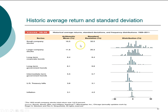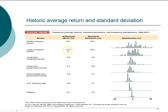Now that you know how to compute both the arithmetic average and the standard deviation, let's take a look at what those statistics were for different investments in the past 70-some years. For small company stocks, remember that it has the highest average return, and it has a standard deviation of 32.5%. For large company stocks, the average return is 11.8%, and the standard deviation is 20.3%. You can see there's a fairly consistent pattern: a higher return is associated with a higher risk.